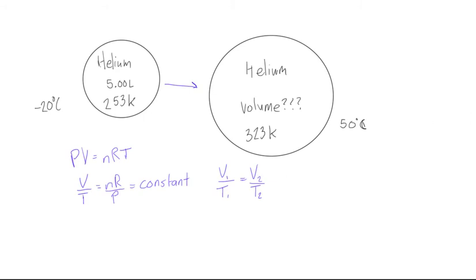So what we do is we'll just plug in our values. First of all our volume is 5.00 liters, and then our initial temperature was 253 Kelvin. And this is equal to, well we don't know what our final volume is, so we'll just leave that blank for now, and then our final temperature after heating was 323 Kelvin.